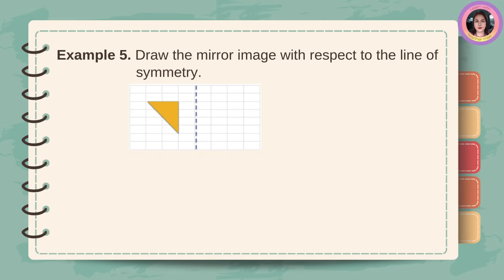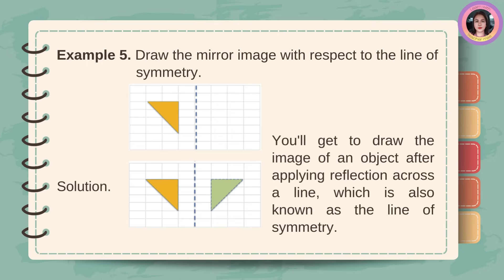Example number 5: draw the mirror image with respect to the line of symmetry. Solution: you'll get to draw the image of an object after applying reflection across a line, which is also known as the line of symmetry.